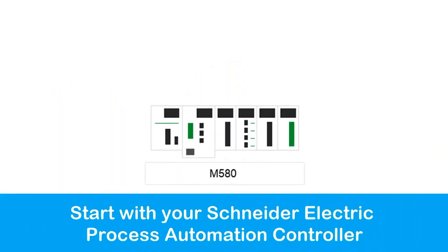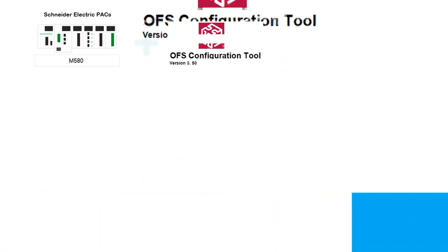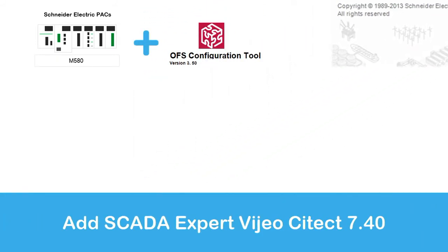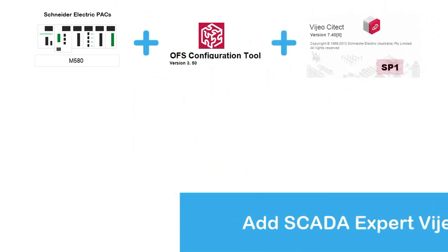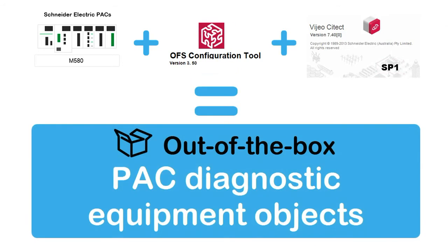By simply starting with your Schneider Electric Process Automation Controller, then adding OFS version 350 or later, and adding VisioSytect 740 Service Pack 1 or later, you have out-of-the-box Pack Diagnostic Equipment Objects to use in your VisioSytect project.